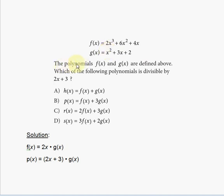It says that these polynomials are defined above. Which of the following polynomials is divisible by 2x plus 3? For a polynomial to be divisible by 2x plus 3, it means that 2x plus 3 must be a factor of this polynomial.